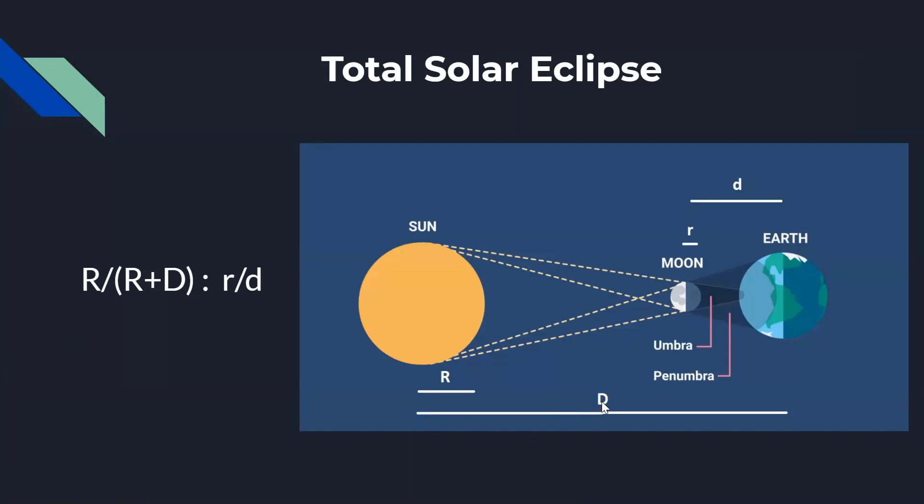For that, I have mentioned some alphabets. So the capital D represents the distance between the sun and the earth. And the capital R is the radius of the sun. And the small r is the radius of the moon. And the small d is the distance between moon and the earth. So by substituting in this equation, and if the ratio R/(R+D) is less than the ratio r/d, then the total solar eclipse will happen.